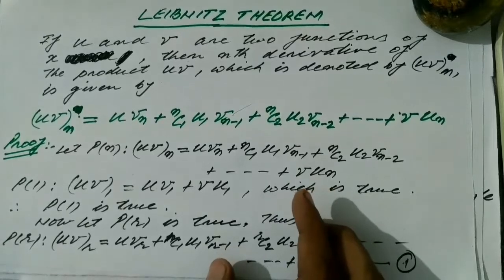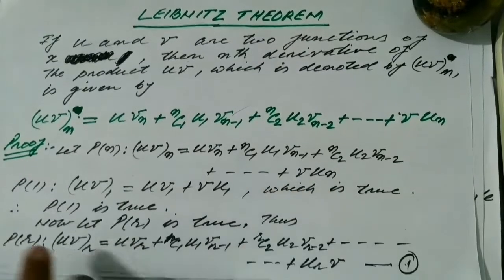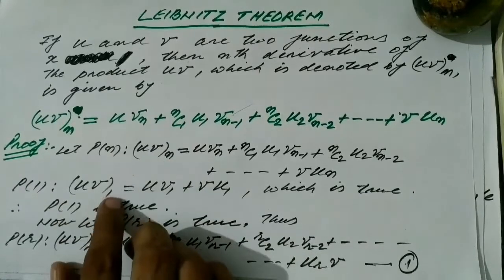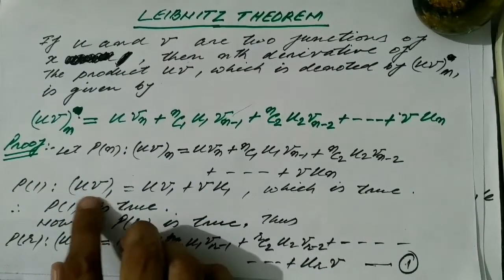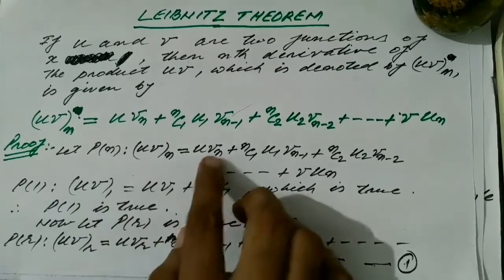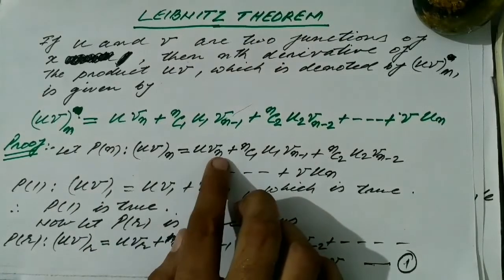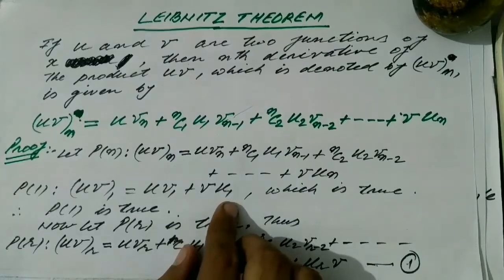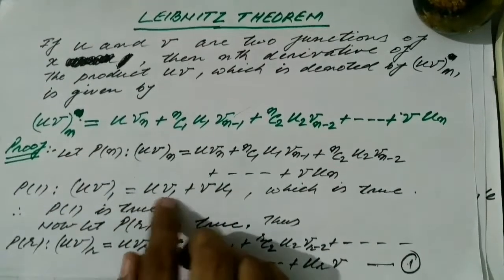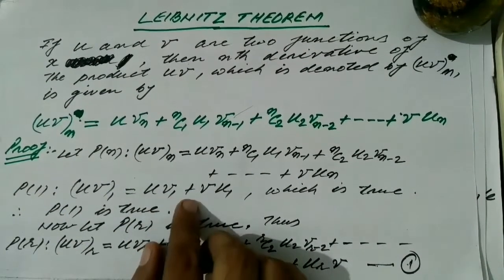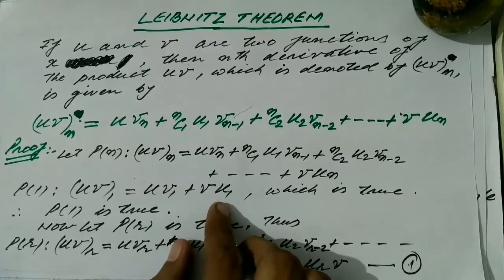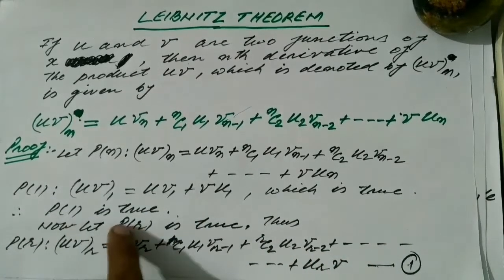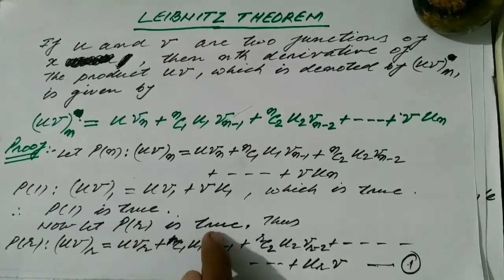Let us check whether this statement is correct for n = 1. Substituting n = 1, we have (uv)_1 on the left hand side. On the right hand side we get u·v1 + u1·v, which is: first function times derivative of the second, plus second function times derivative of the first. This is true by the product rule. So P(1) is true. Now let P(r) be true.